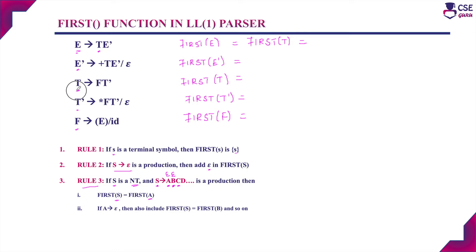FIRST(T) requires us to consider the first symbol on the right-hand side of the production T → FT'. That beginning symbol is F, which is also a non-terminal. So we need to find FIRST(F) and include it in FIRST(T). Thus FIRST(T) = FIRST(F).